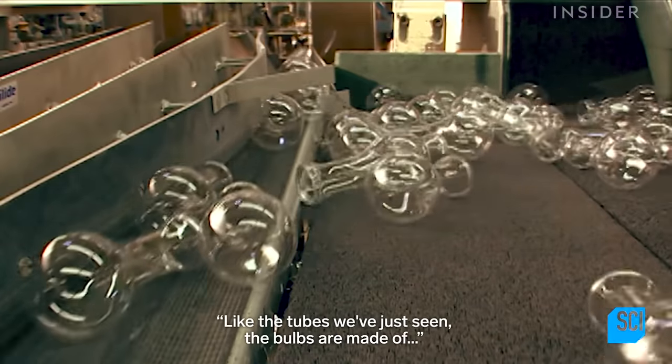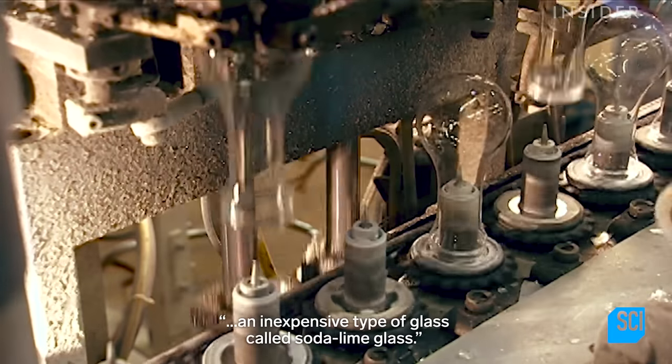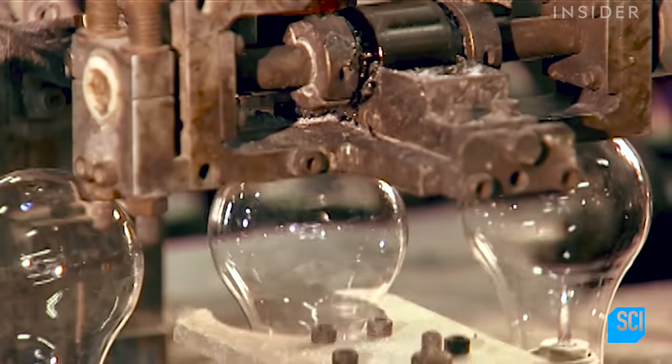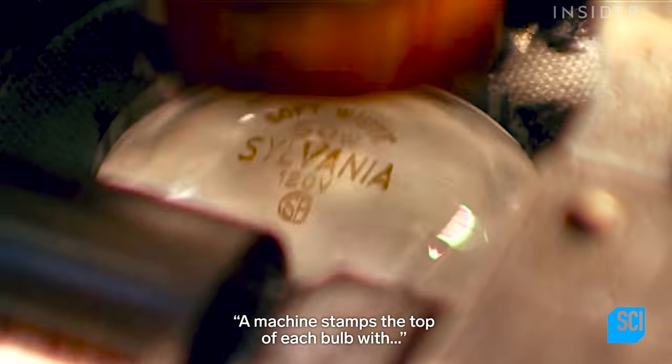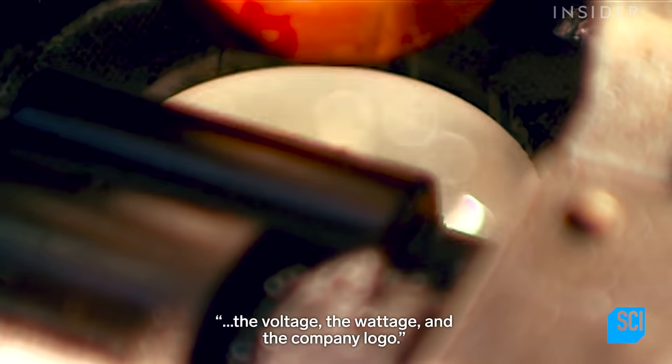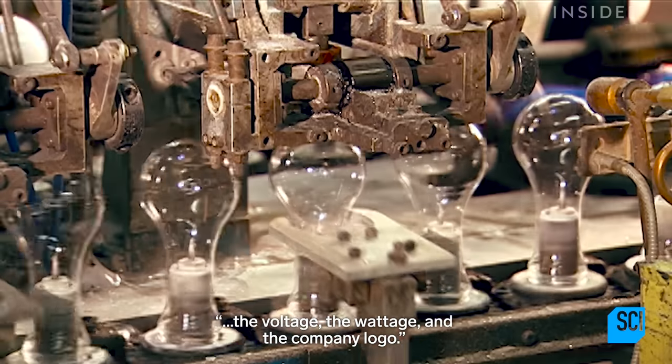Like the tubes we've just seen, the bulbs are made of an inexpensive type of glass called soda lime glass. A machine stamps the top of each bulb with the voltage, the wattage, and the company logo.